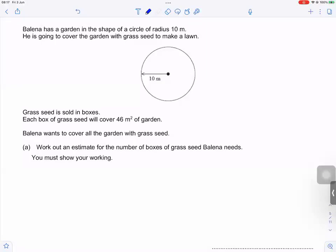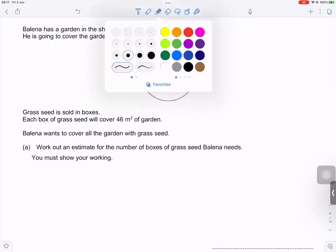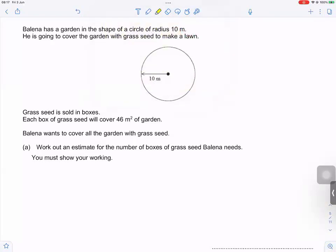Balina has a garden in the shape of a circle, so the most important thing for me now is to notice that the shape is a circle. The radius is 10 meters. He is going to cover the garden with grass seed to make a lawn. Grass seed is sold in boxes. Each box of grass seed will cover 46 meters squared of garden. Balina wants to cover all the garden with grass seed.